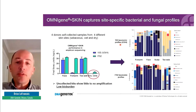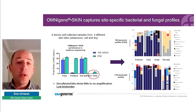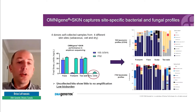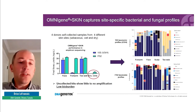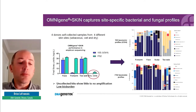Looking at the 16S taxonomic profile (V3/V4), forearm, face, and scalp samples are dominated by Cutibacterium — as expected and consistent with published literature. Toe web samples show a different community structure, mainly dominated by two species: Corynebacterium and Staphylococcus, which has also been reported. Looking at ITS2 sequencing, the main skin fungal genus detected is Malassezia — one of the most abundant skin commensals — except for toe web samples where we see greater diversity of fungal genera, consistent with the literature. OmniGene Skin really captures a site-specific profile, both bacterial and fungal.